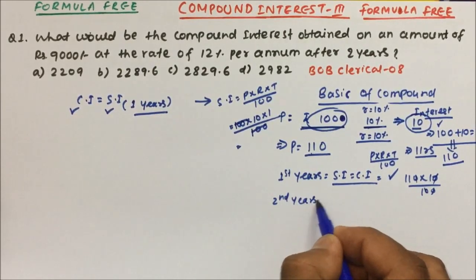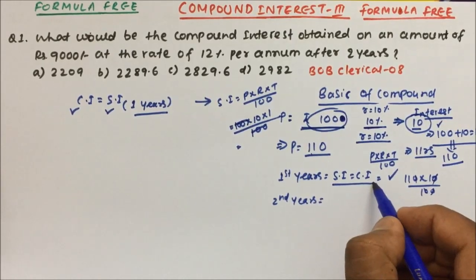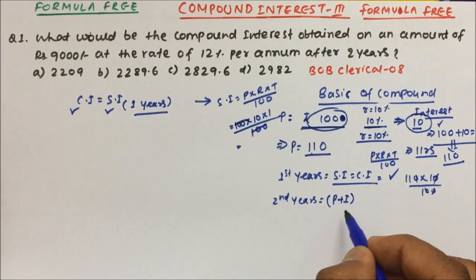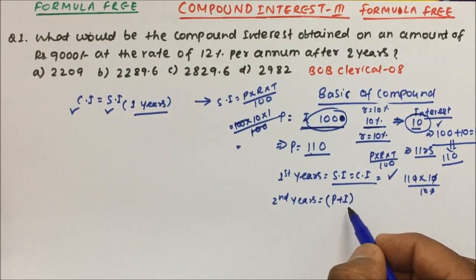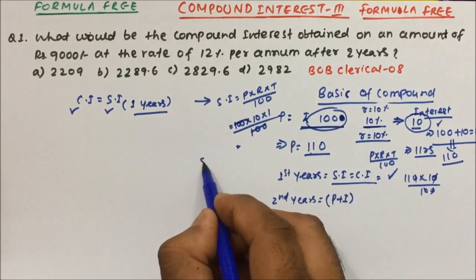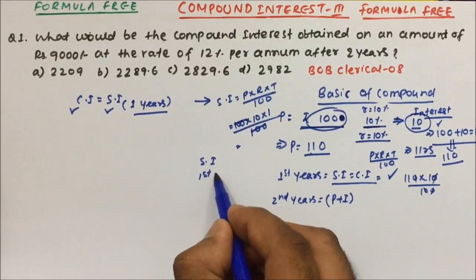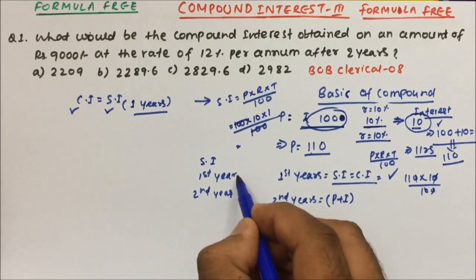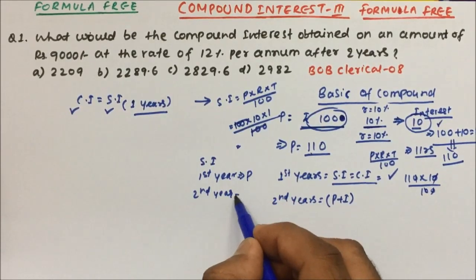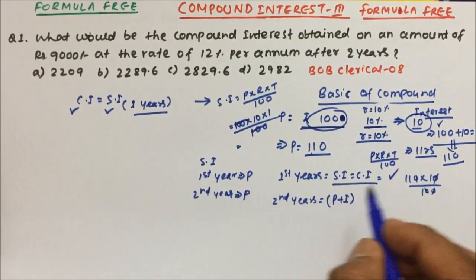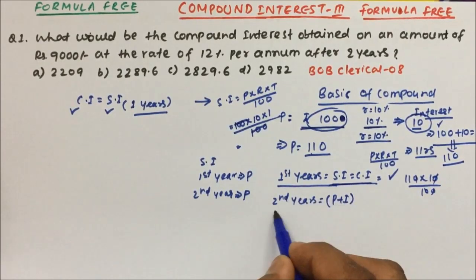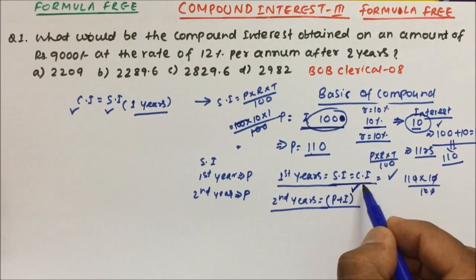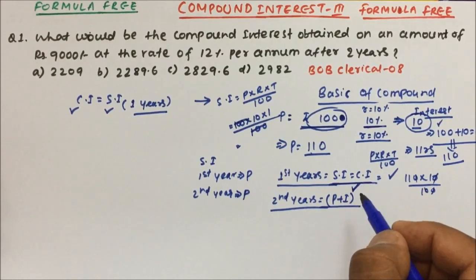From the second year onwards, interest is calculated on the amount — that is principal plus interest. That is the only difference between compound interest and simple interest. In simple interest, every year the interest is calculated on the principal. In compound interest, from the second year onwards, interest is calculated on the amount.